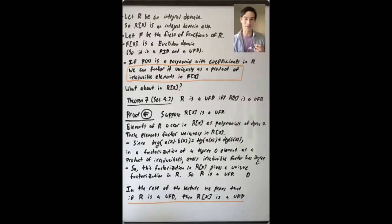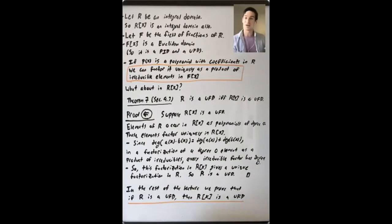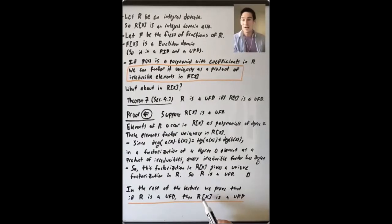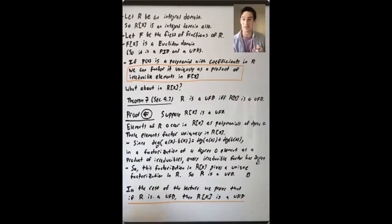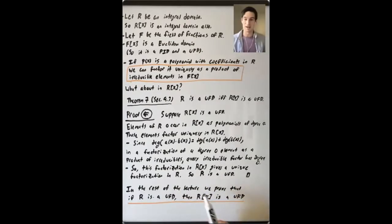So the whole rest of the lecture focuses on showing that if R is a UFD, then R[x] is a UFD. This is the more challenging direction because, while you know elements in R factor nicely — telling you degree-zero elements of R[x] factor nicely — there are a whole bunch of other elements of positive degree in R[x], and we don't initially know anything about the factorizations of those elements.